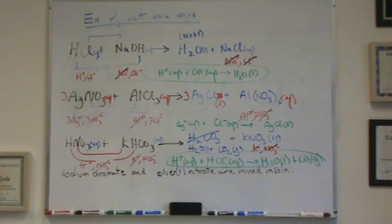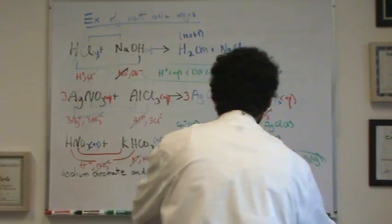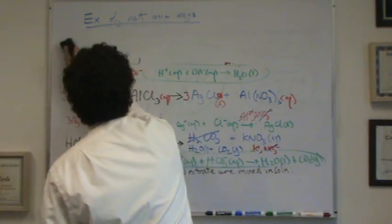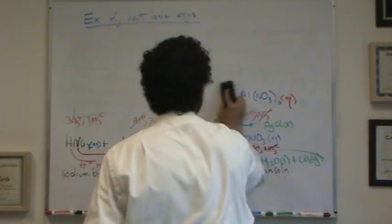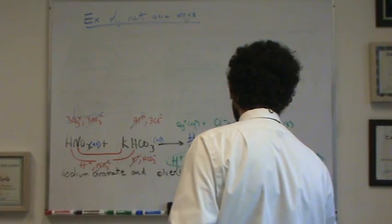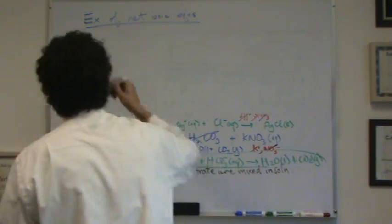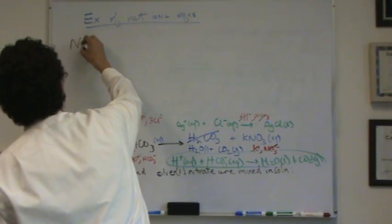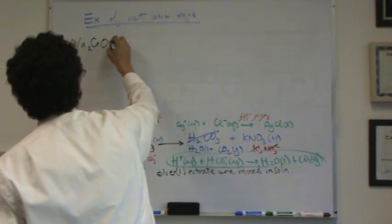Now the last one, the bottom one. This is actually written out in words. So let's try this. I'm going to write it up here. So sodium chromate. You've got to know your naming in order to get this stuff down. Sodium chromate would be Na2CrO4.